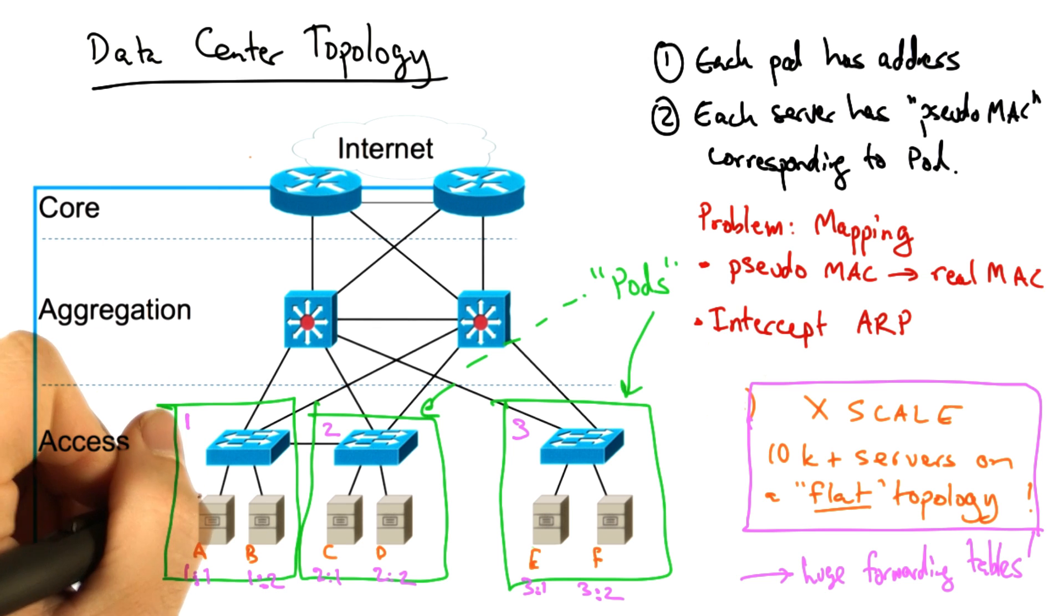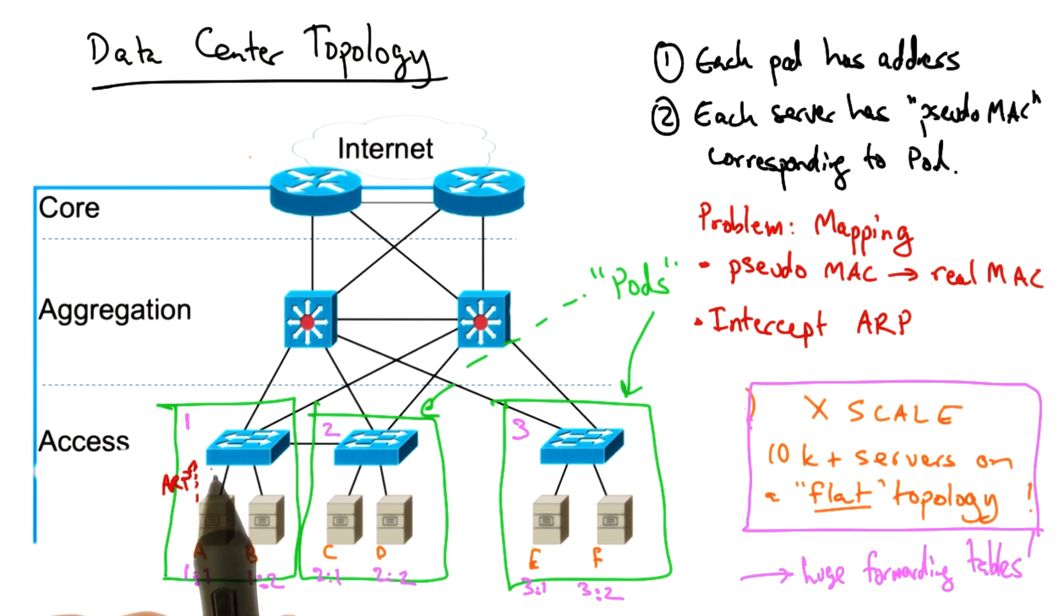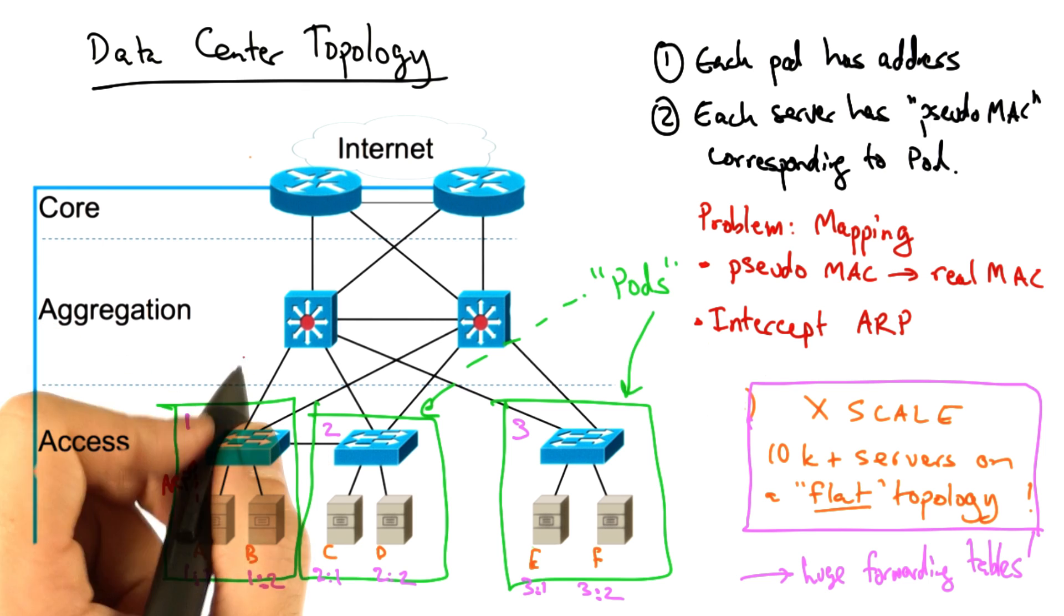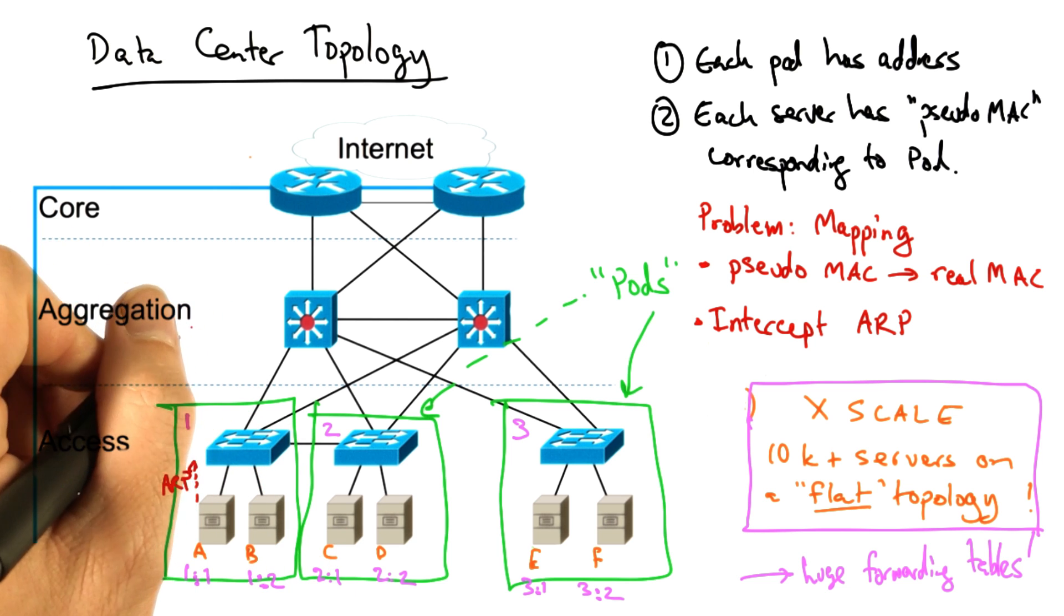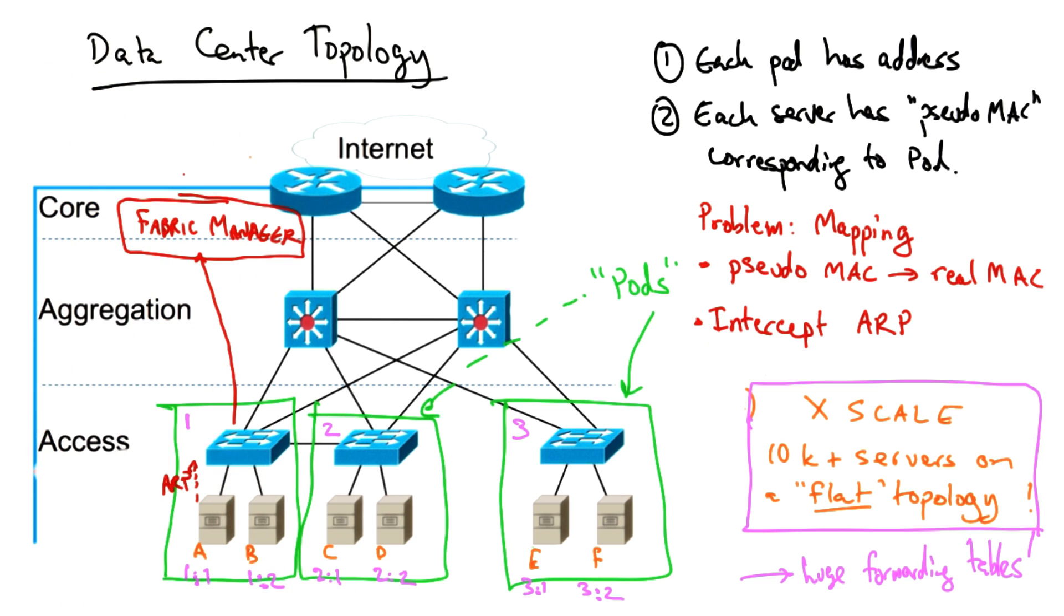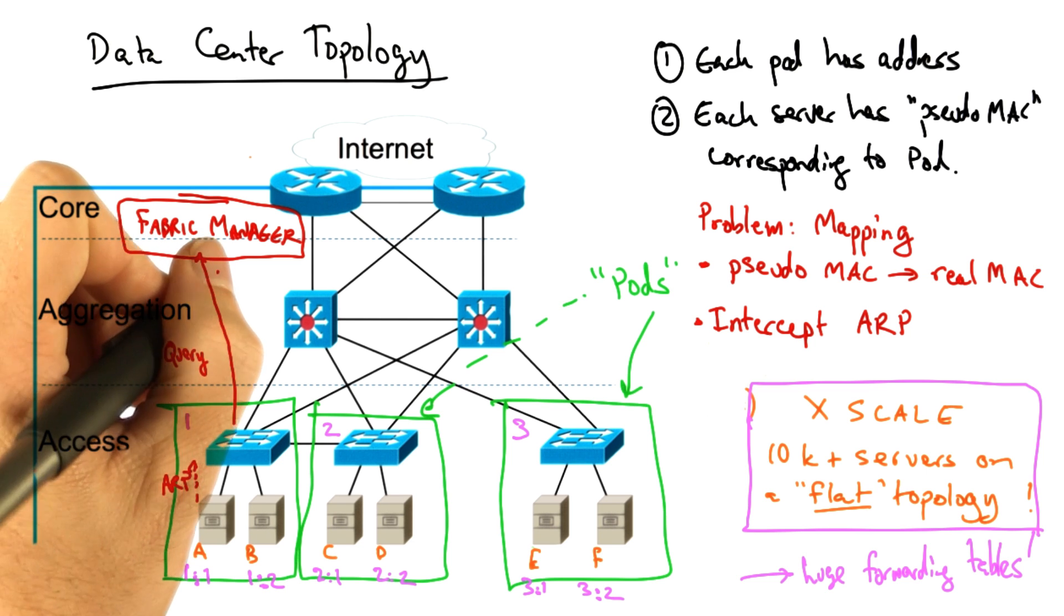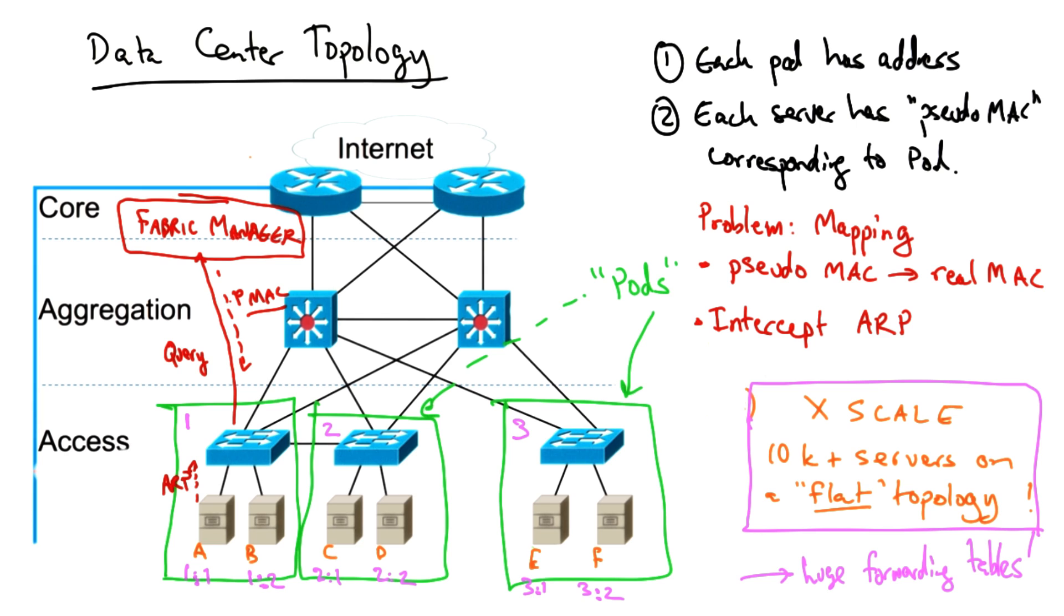The solution is as follows. When a host, such as server A, issues an ARP query, that query is intercepted by the switch. But instead of flooding that query, the switch intercepts the query and forwards it to an entity called the fabric manager. The fabric manager then responds with the pseudo MAC corresponding to that IP address.